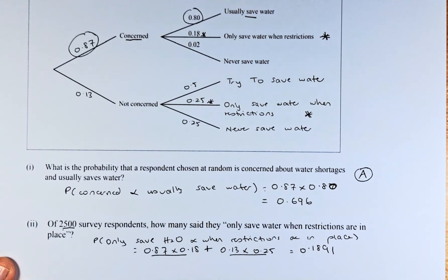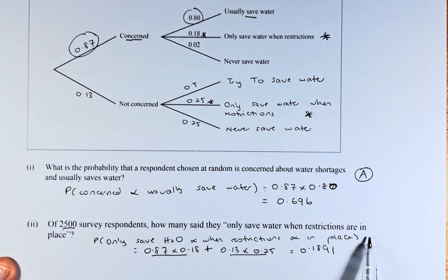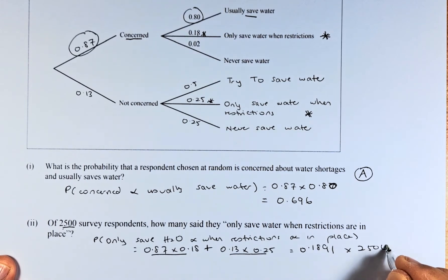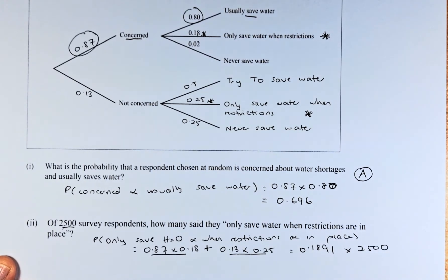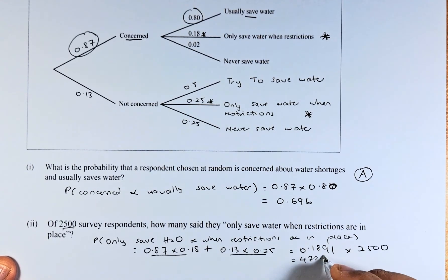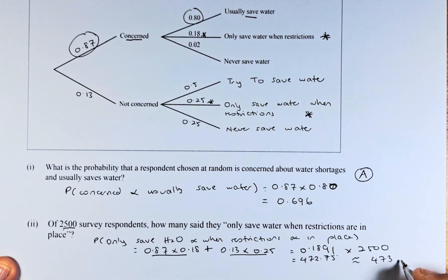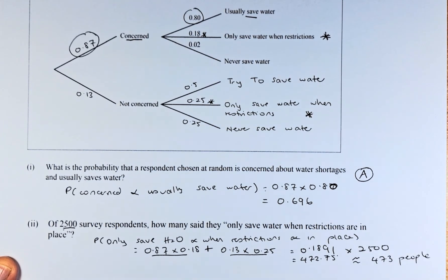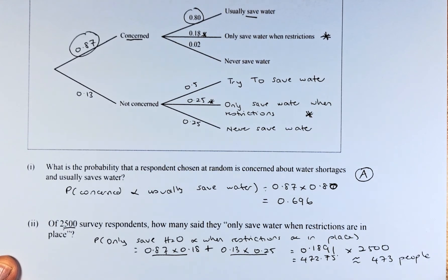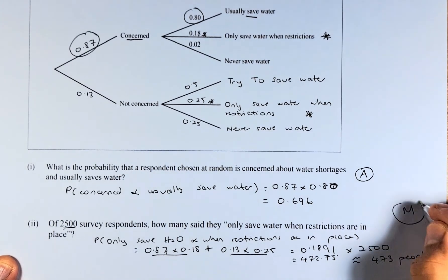That is not the end of the question. The question asks you, how many said that they will only save water when restrictions are in place? So, we need to get that number multiplied by 2,500 and it is going to come up to 472.575. So, the answer should be 473 people because you cannot have 472.75 people and if you can answer that, that will give you a merit in this paper.